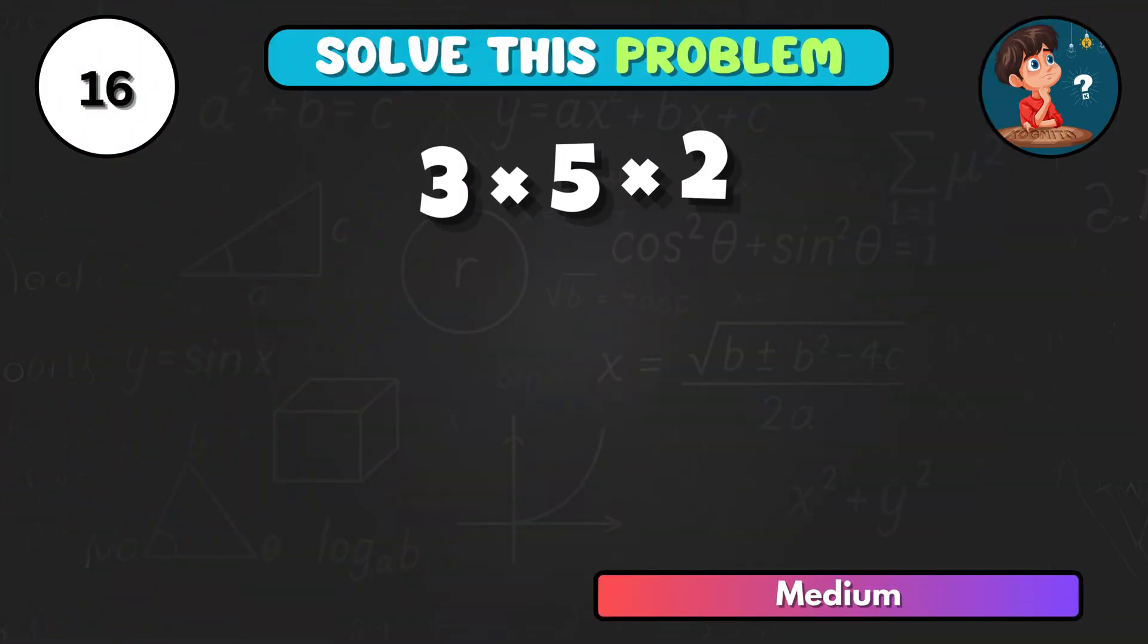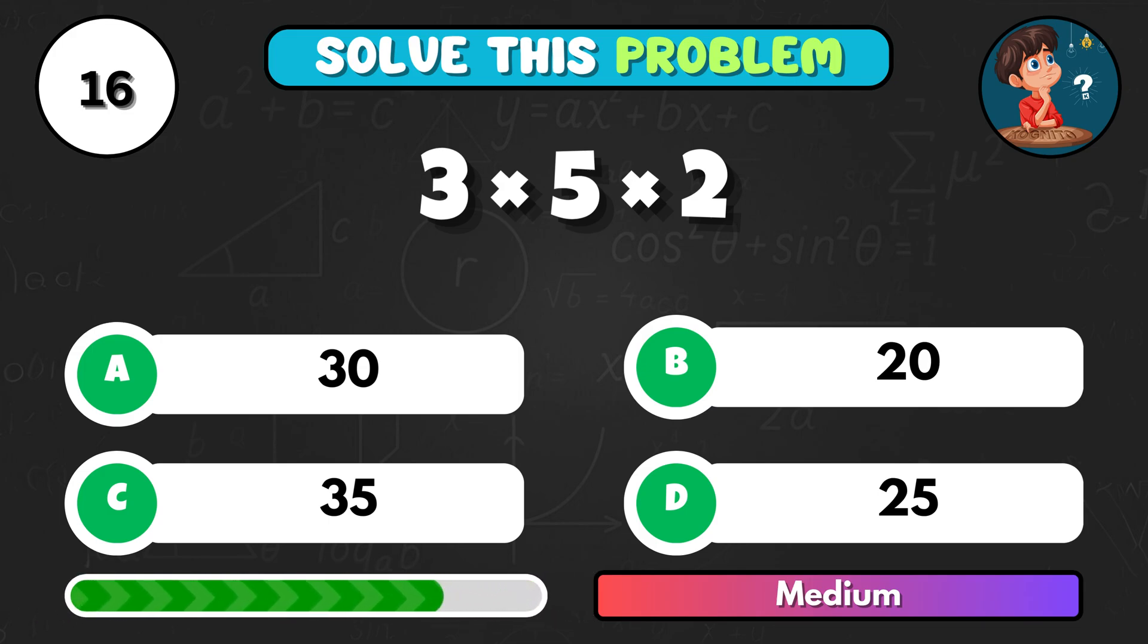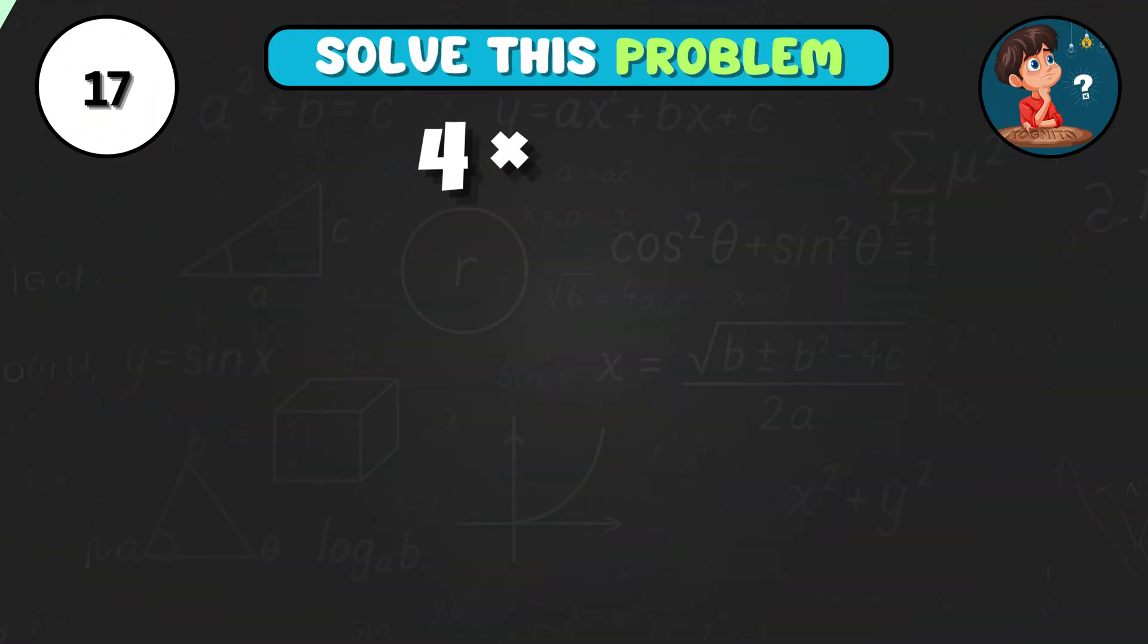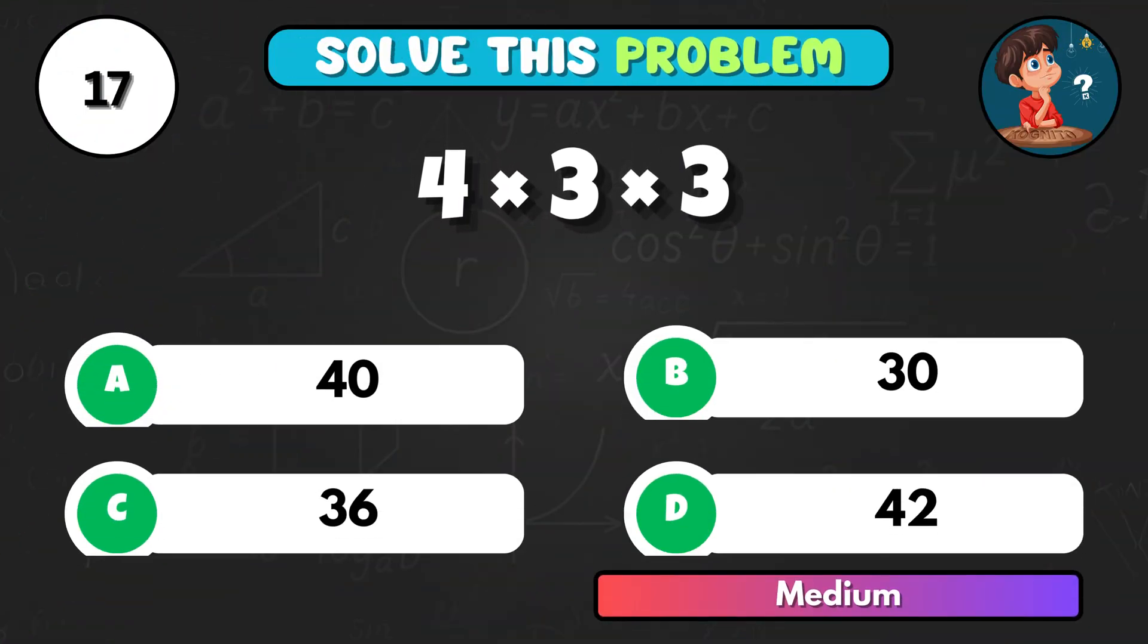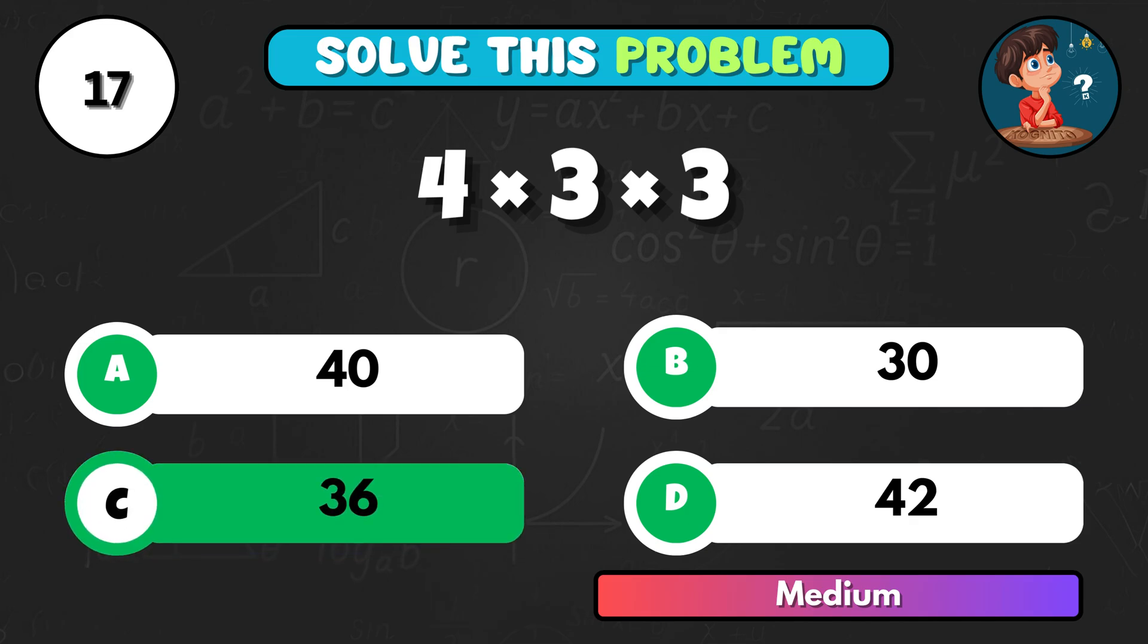Here's a three number combo. 3 times 5 times 2. It makes A, 30. Try this. 4 times 3 times 3. Think carefully. That's C, 36.